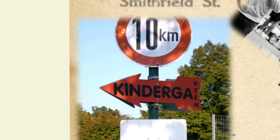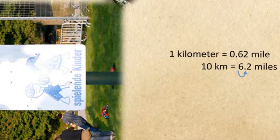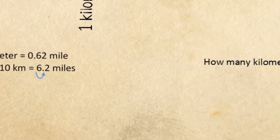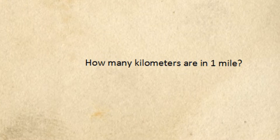We can think like this to convert 10 kilometers to miles. If one kilometer is about 0.62 mile, then 10 kilometers is about 6.2 miles. And you can convert back — try it out. How many kilometers are in one mile?